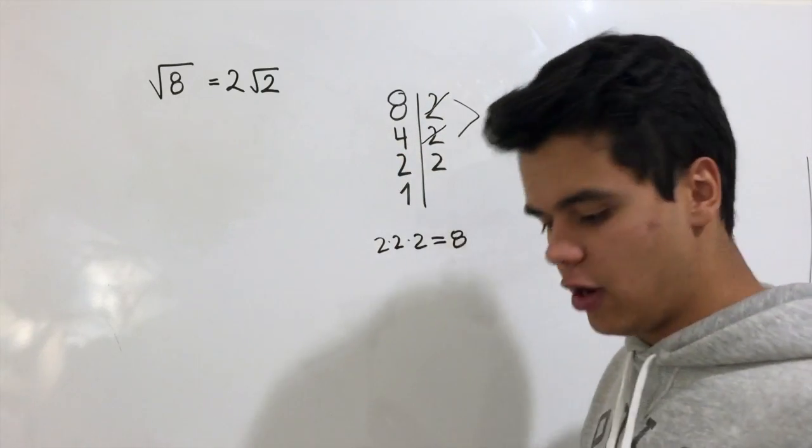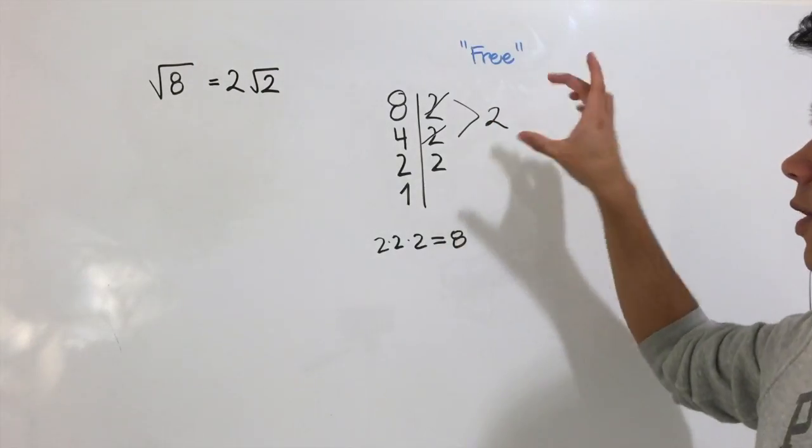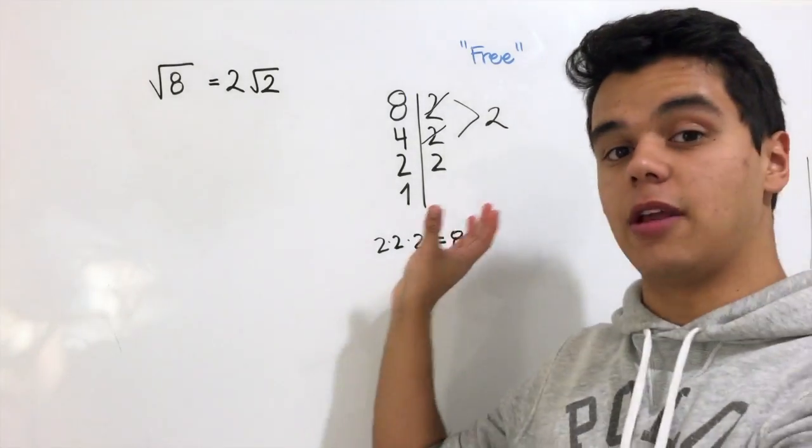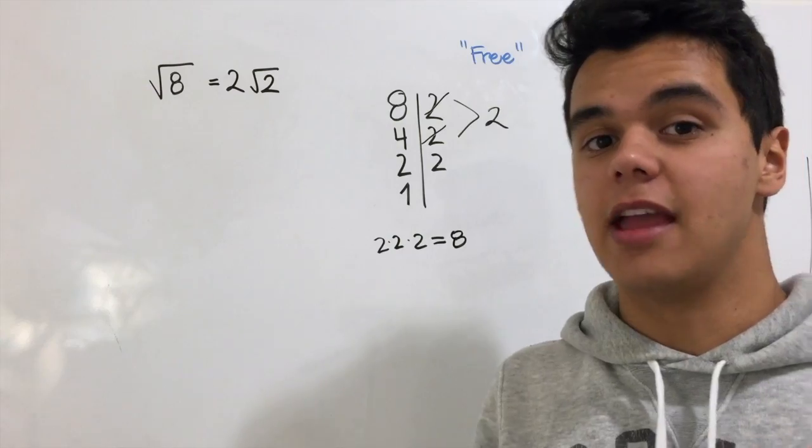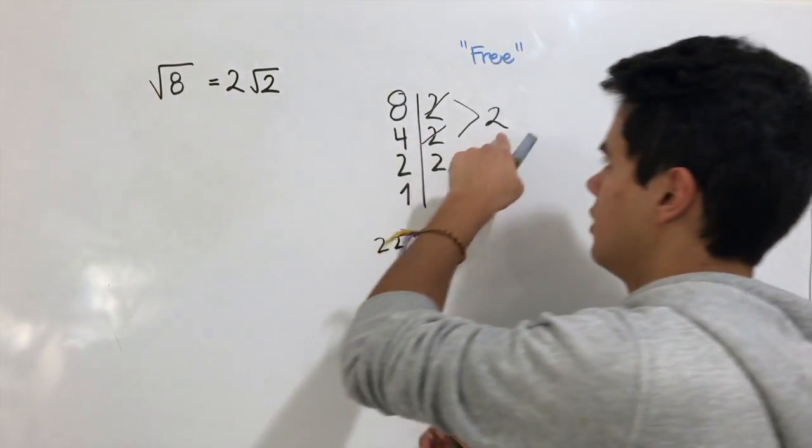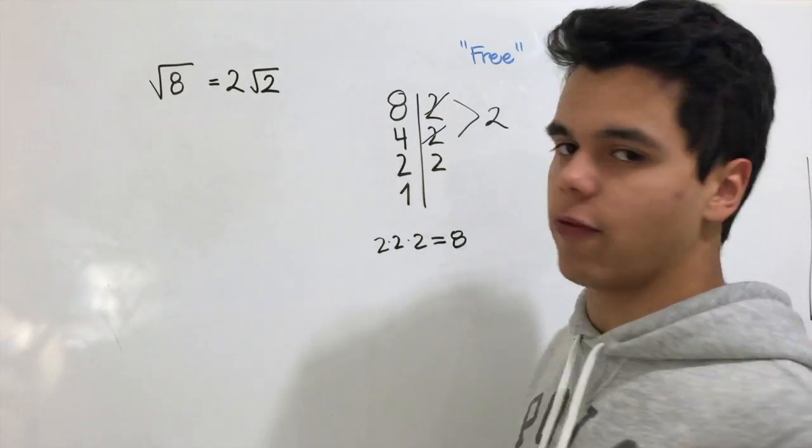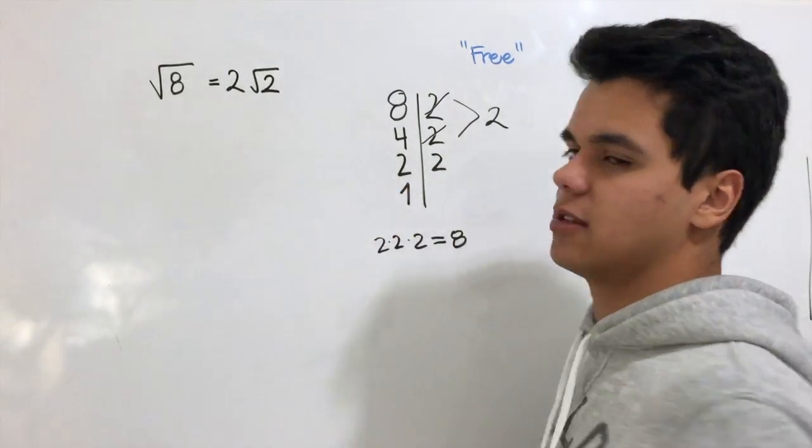This 2 I can take out of the radical. These are going to be my numbers outside the radical, and these are going to be my numbers that are still inside the radical. This 2 is the 2 in front of the radical, and this 2 that is still inside the radical is still inside.